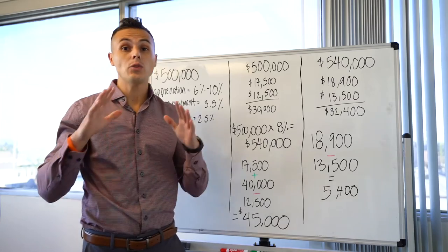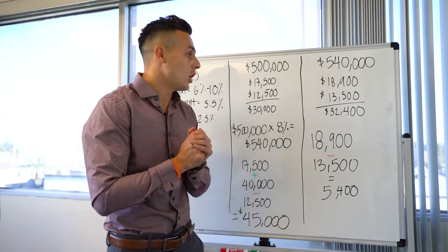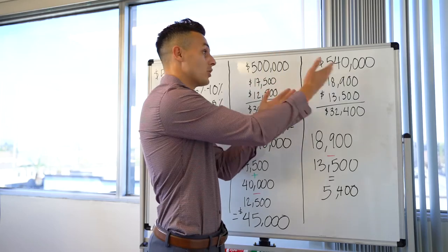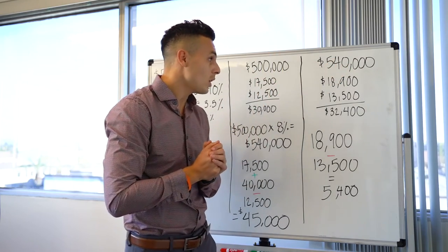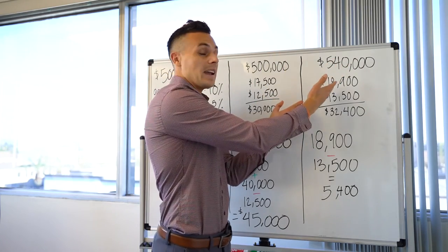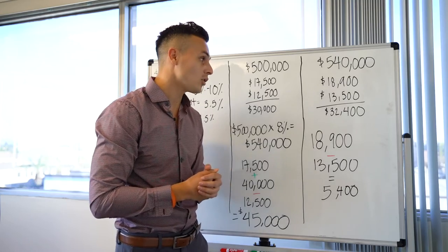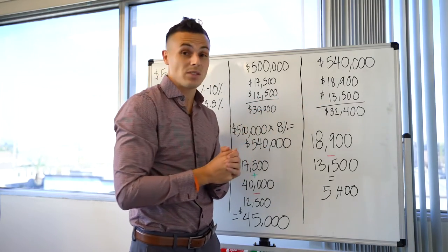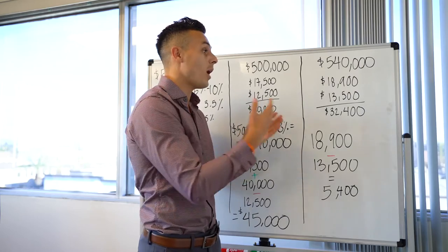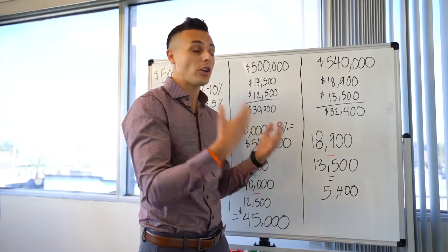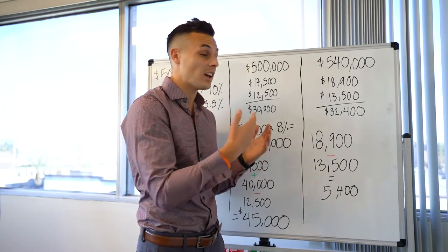Whereas if you wait just one year, that home is now worth $540,000. Your down payment is $18,900, your closing costs are $13,500. So out of pocket, you're spending about $32,400 just to get into that home.